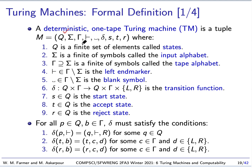We have Q, which is a finite set of states. We have sigma, which is our input alphabet. Gamma, which is our tape alphabet, which includes all the members of sigma. Then we have a left end marker — a symbol which is in our tape alphabet but not a member of sigma. And we have a blank symbol. We have our transition function delta, which takes a state and a member on the tape, and produces a new state, possibly overwrites the member that was on the tape, and then moves the tape head left or right. And then we have a start state, an accept state, and a reject state.